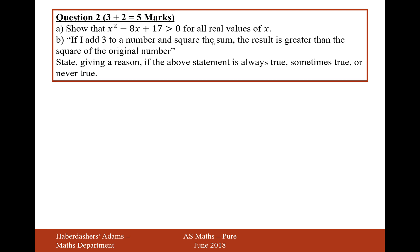And there we are. So if you square the sum and square the sum, the result is greater than the square of the original number. Okay, so state giving a reason whether the statement is always true, sometimes true or never true. I think I just need to algebraically form this first. So if I add 3 to a number and then square that sum, it's greater than the square of the original number.